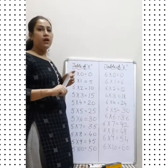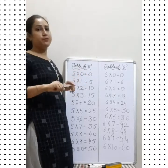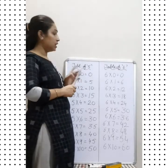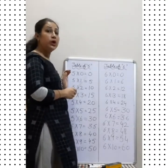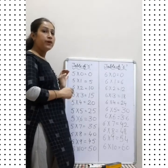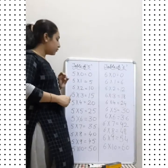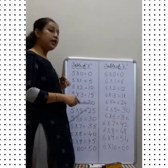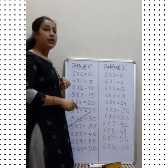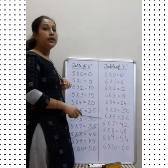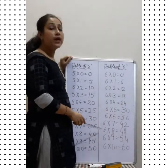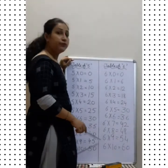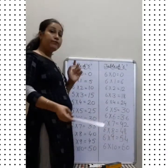Speak with me again. Now I have to ask you again. Table of 5, speak with me everyone: 5 5's are 25, 5 6's are 30, 5 7's are 35, 5 8's are 40, 5 9's are 45, 5 10's are 50. Very good.